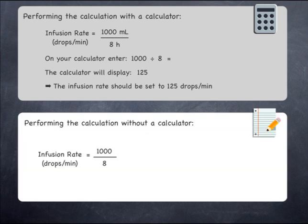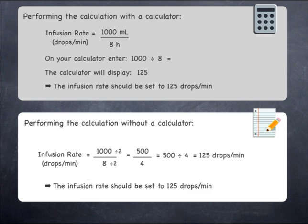To perform the calculation without a calculator, start by cancelling 1000 over 8. Since they are both even numbers, you can apply the two rule and divide both numbers by 2, giving 500 over 4, which is 500 divided by 4. Using short division to perform this calculation, you should arrive at an answer of 125. The infusion rate should be set to 125 drops per minute.